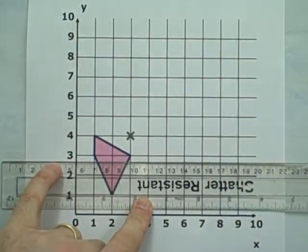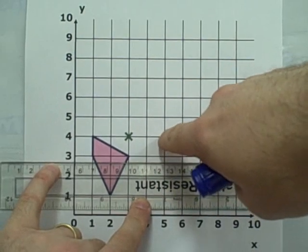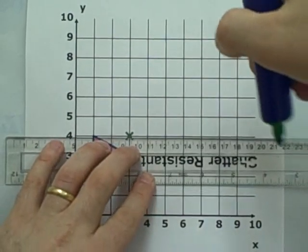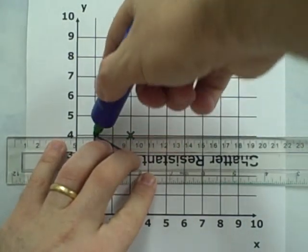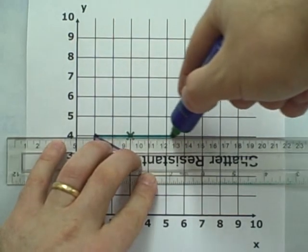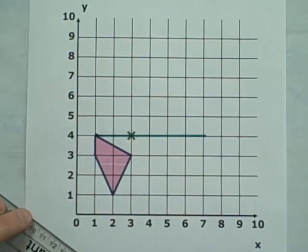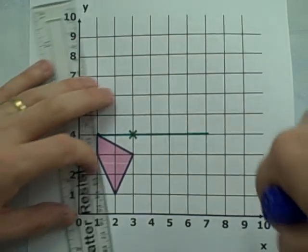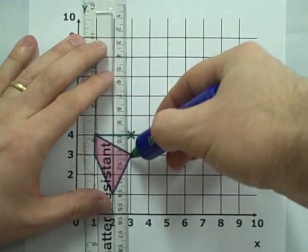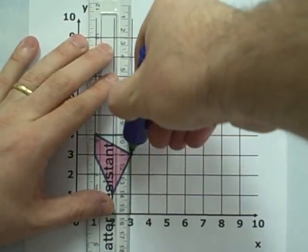1,2 to the left becomes 1,2,3,4 to the right. 1 down becomes 2 up.